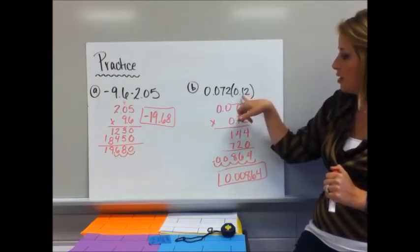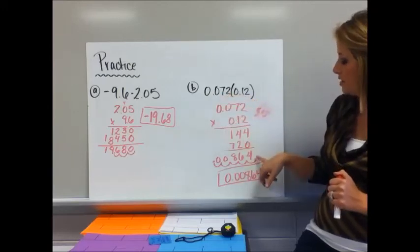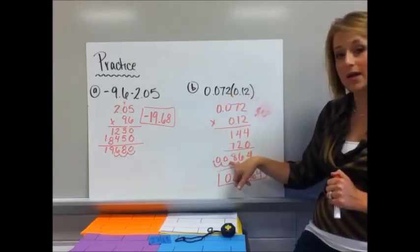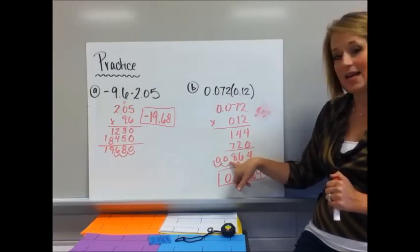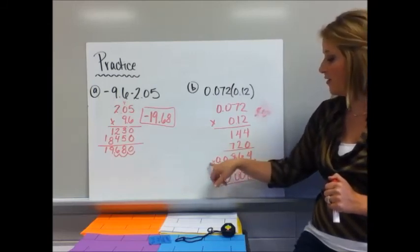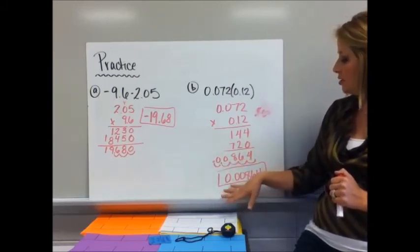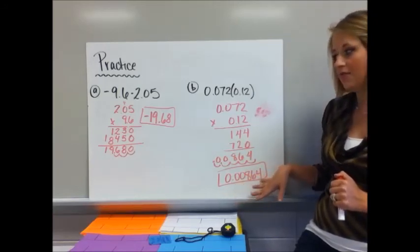Well, I count my decimal places 1, 2, 3, 4, 5 and when I went to move that over 1, 2, 3 I had ran out of numbers so I had to annex zeros for the 4th and 5th decimal place. So my answer is 0.00864.